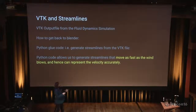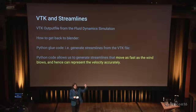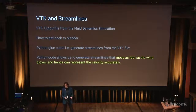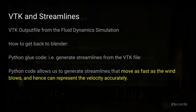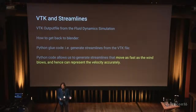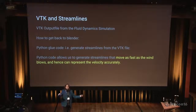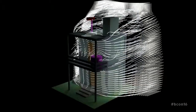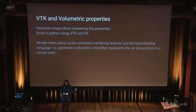Once we have the simulation, we obtain a VTK file: we have all the little boxes and a value in each box — for example, the wind speed in that box. The question is how to get this back into Blender. I wrote some Python glue code to create streamlines, and I was very proud of it because it automatically generates keyframes so the streamline moves at the correct speed — you not only see the line showing how the air moves, but also see it moving at the correct speed. This is what the result looks like: the building with streamlines flowing around it.